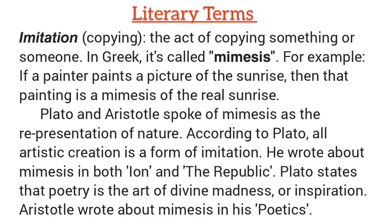What is imitation? Imitation (Greek: mimesis) is the act of copying something or someone. For example, if a painter paints a picture of the sunrise, that painting is a mimesis of the real sunrise. Plato and Aristotle spoke of mimesis as the representation of nature. According to Plato, all artistic creation is a form of imitation — he wrote about mimesis in both Ion and The Republic. Plato also states that poetry is the art of divine madness or inspiration. Aristotle wrote about mimesis in Poetics.